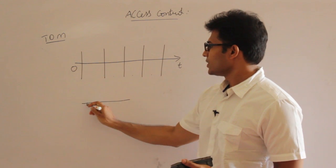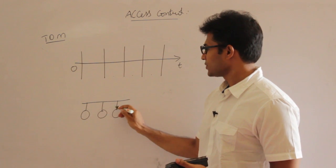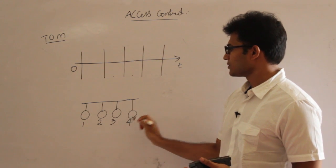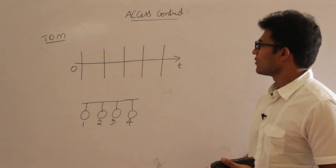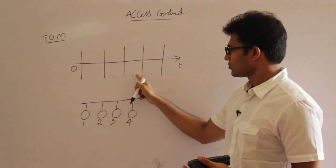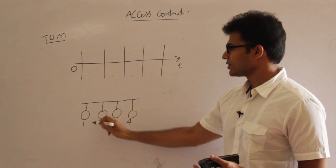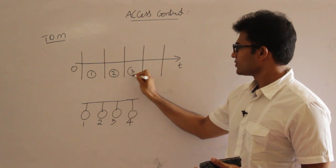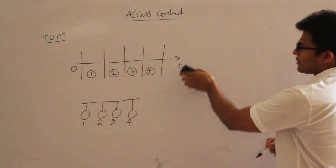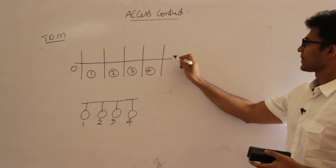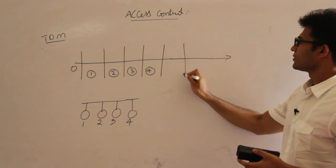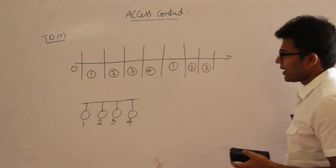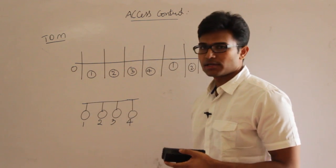You give each slot to each station in a round-robin manner. Assume we have a broadcast channel and four stations connected to it — station one, station two, station three, station four. Divide the time into slots and assign each slot to each station: first slot to station one, second to station two, third to station three, fourth to station four, and then this process continues again in round-robin.